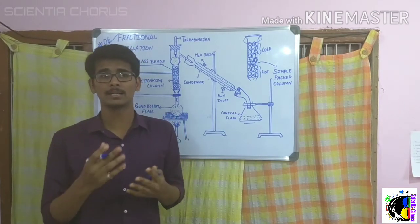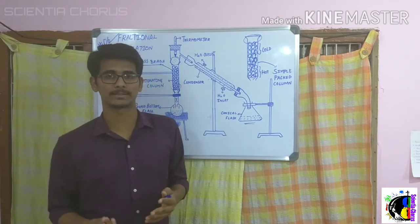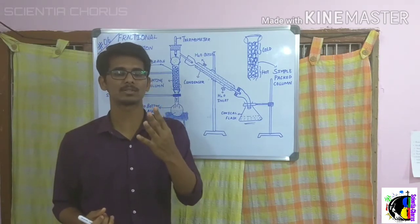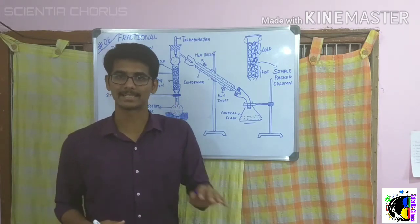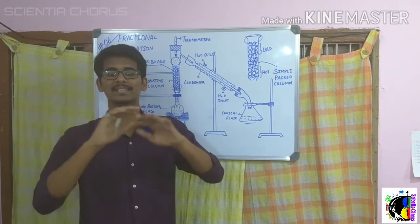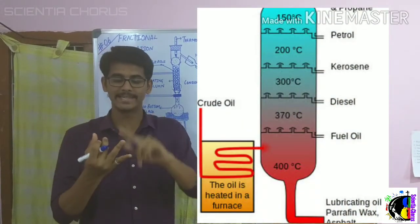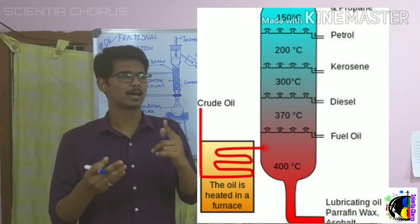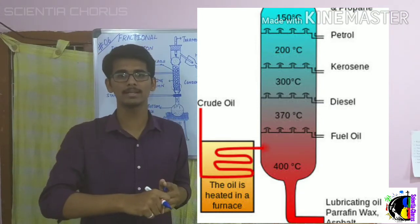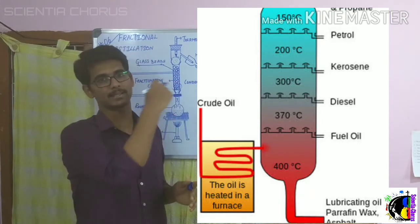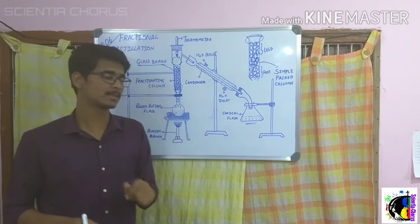The next application is the purification and separation of petroleum products. Crude oil is a natural source found under the Earth's crust. From crude oil we can separate petroleum products such as petrol, diesel, kerosene, and paraffin wax. All these petroleum products are obtained from crude oil using the distillation technique.